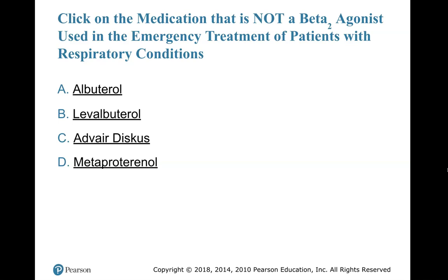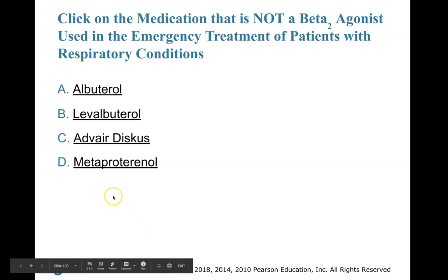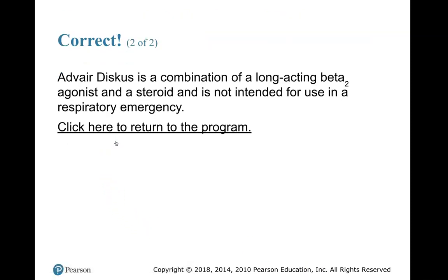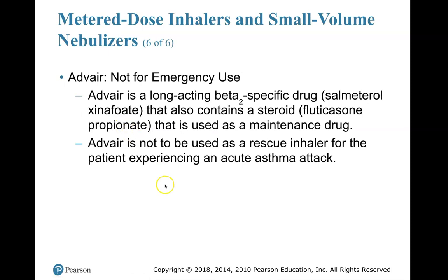Click on the medication that is not a beta-2 agonist used in the emergency treatment of patients with respiratory conditions. If you chose Advair Discus, you would be correct. Advair Discus is a combination of a long-acting beta-2 agonist and a steroid, and is not intended for use in a respiratory emergency. Advair is a maintenance drug — people with COPD take it every day. Advair is not to be used as a rescue inhaler for a patient experiencing an acute asthma attack.